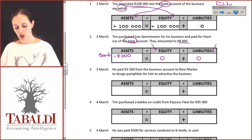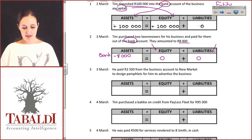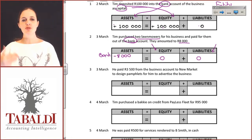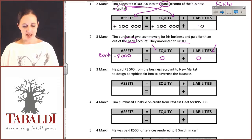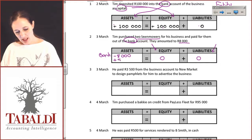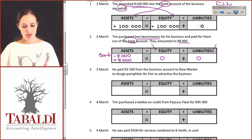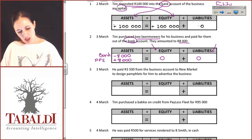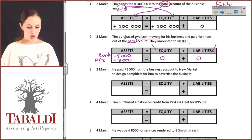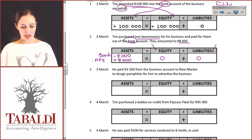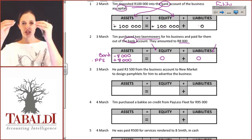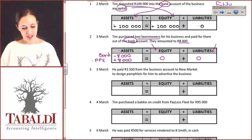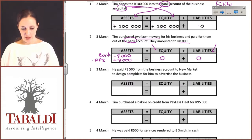The lawnmowers represent assets — resources controlled by the entity, used to create future income and bring an inflow of economic benefit. So assets increase by R8,000 as well. Although net assets haven't changed, R8,000's worth of value has moved out of the bank and into PPE. So the effect on total assets is zero, but within assets we have moved around. One transaction can affect the accounting equation within the same element.